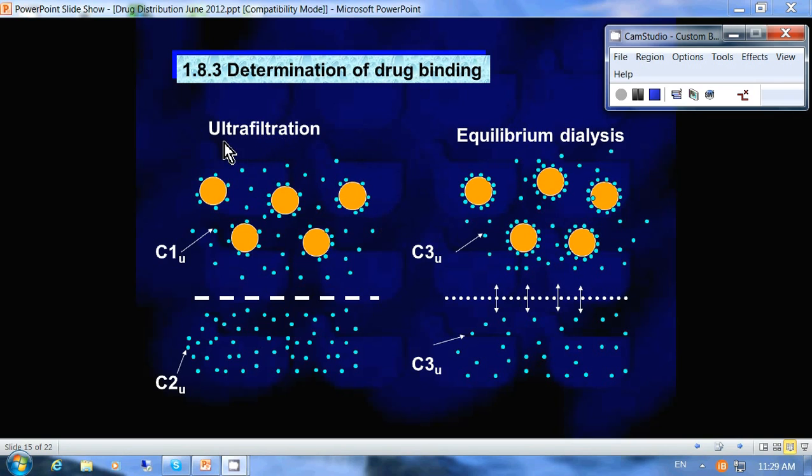So there are two methods. There's ultrafiltration here on the left and equilibrium dialysis on the right. With ultrafiltration, like it says, it uses an ultrafine filter here, this little membrane here, to filter off the amount of unbound drug.